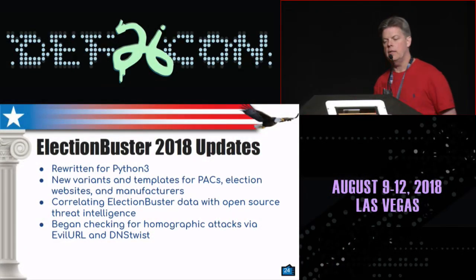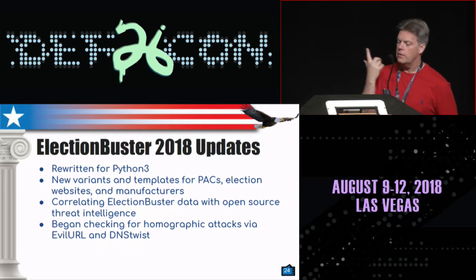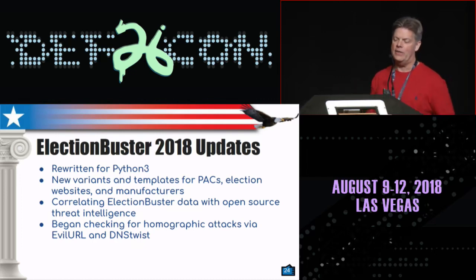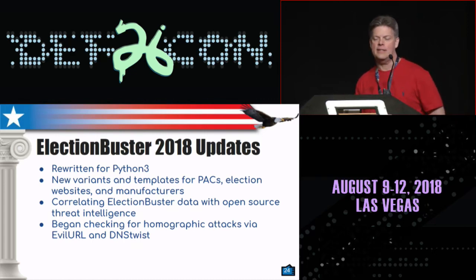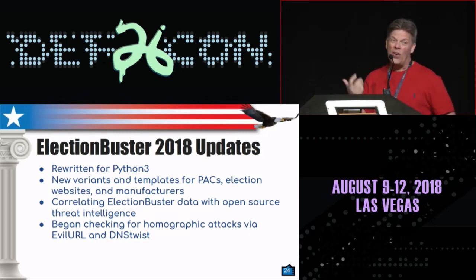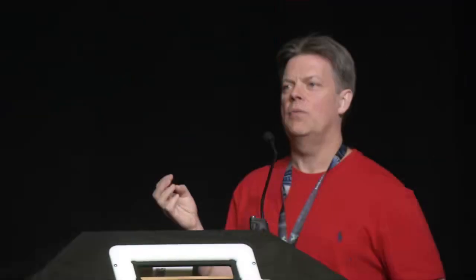So far this year in 2018, we took the Python code that we had — Python 2.7 — and put it into Python 3. The threading model we were using in the previous version is different than the process model we're using now in Python 3. We also had some new variants of templates for PACs. We included election websites and manufacturer's websites. And we started correlating Election Buster data with open source threat intelligence information. We decided not to continue that development — just take advantage of the good work that folks have already done and utilize those tools. And we did start looking for some homographic attacks.